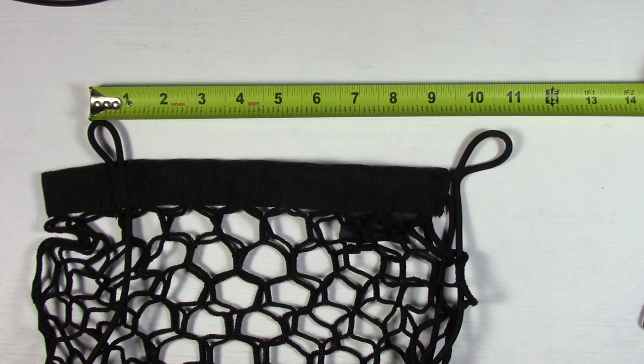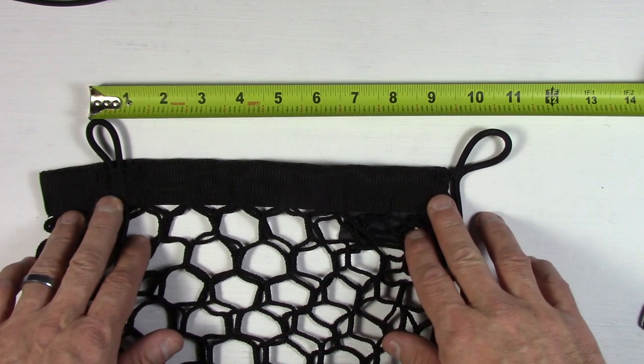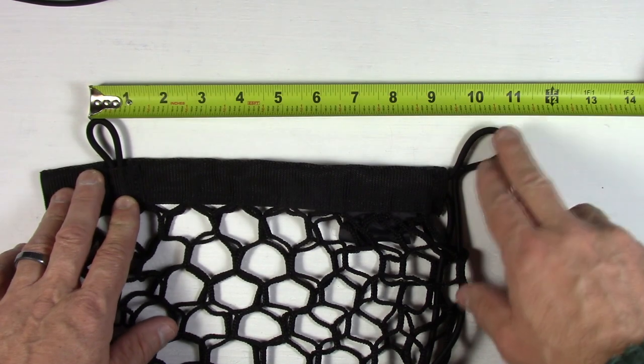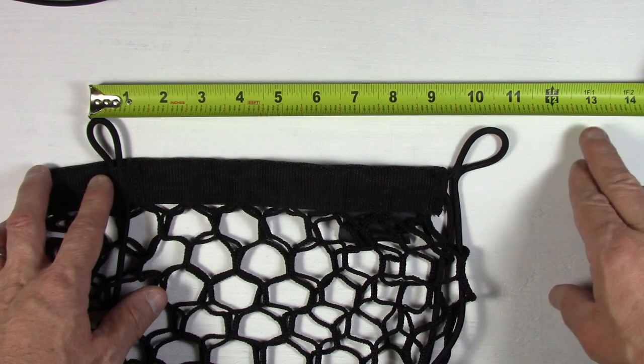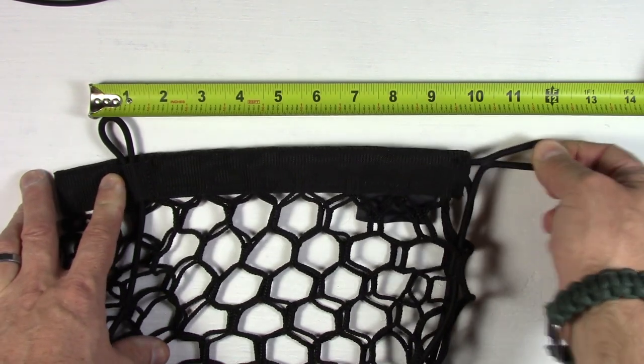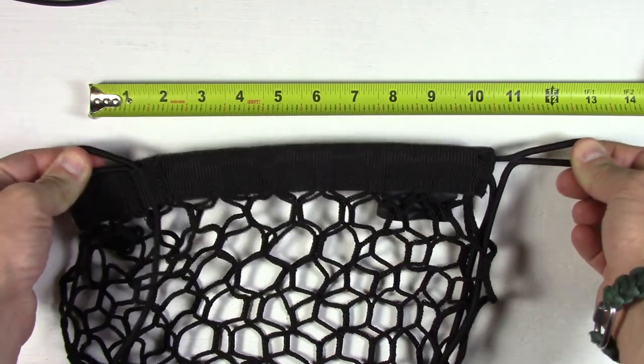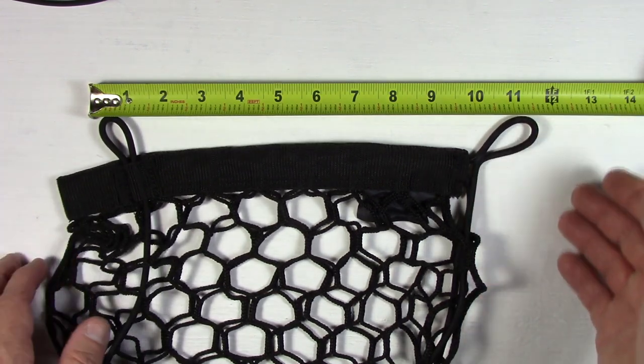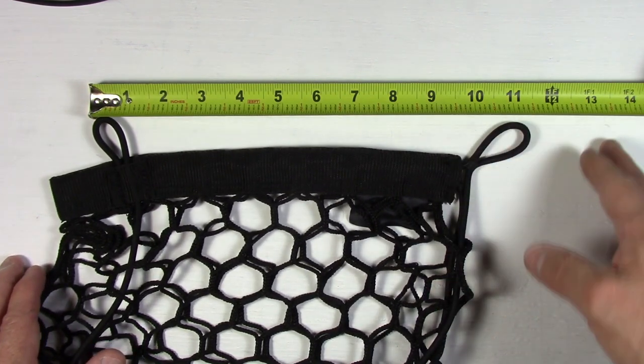Here are the measurements for the loops on the actual cargo net. This is the top and this is the bottom. You have about 11 inches in between them. I measured them out on the Sorento and the actual anchors are 13 inches apart. But these are bungees, so they will stretch to that distance and that will make it a really nice taut fit. Anywhere between 11 and 13 will be great.